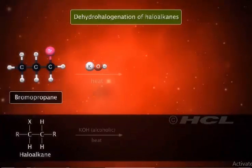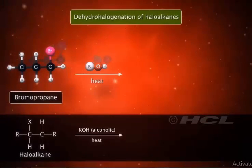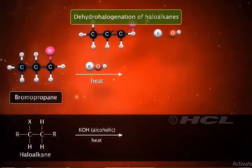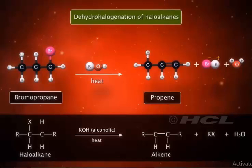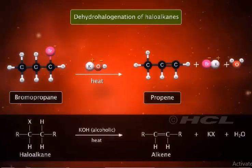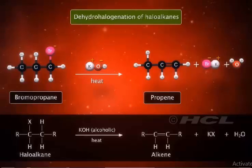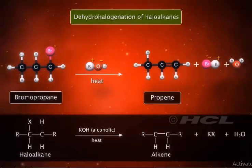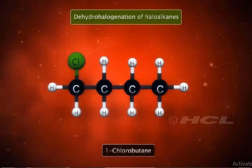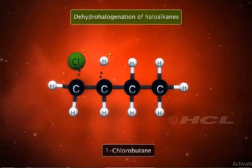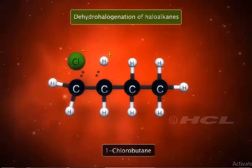Haloalkanes, on heating with alcoholic sodium or potassium hydroxide, lose one hydrogen atom and a halogen atom from the adjacent carbon atom to give an alkene. Dehydrohalogenation is a type of beta-elimination reaction. Depending upon the structure of the haloalkane, one or more isomeric alkenes are formed.